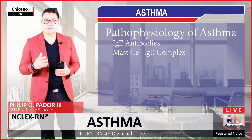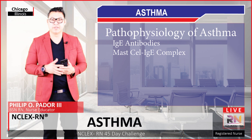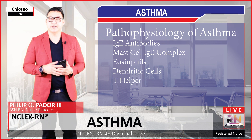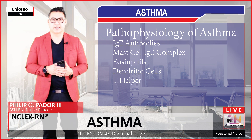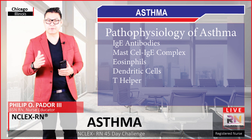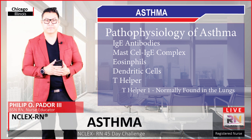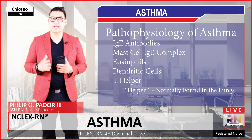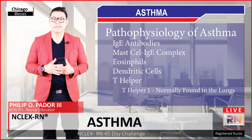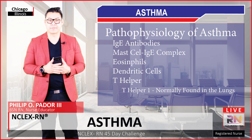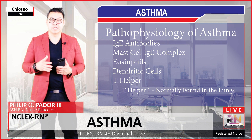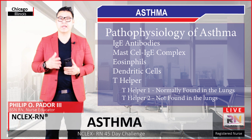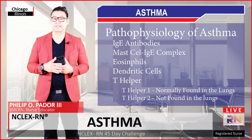Other important players in the pathophysiology of asthma include eosinophils, dendritic cells, and T-helper cells. There are two main types of T-helper cells: T-helper 1 and T-helper 2. T-helper 1 is normally found in the lungs. However, there is an imbalance in asthma, because T-helper 2 cells — which are not normally found in the lungs — are upregulated in asthma. So we have more T-helper 2 cells in the lungs of asthmatics.